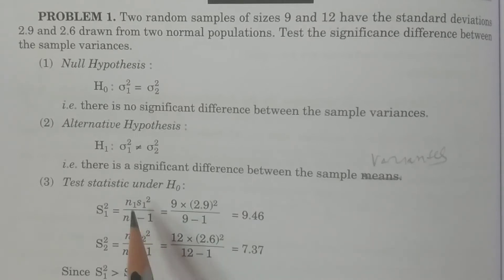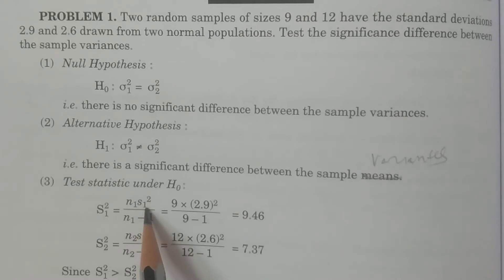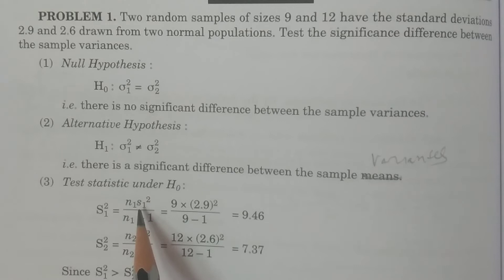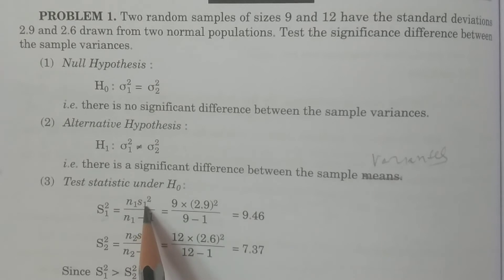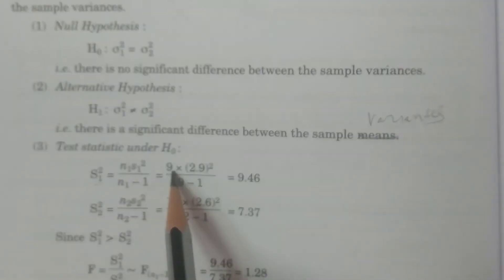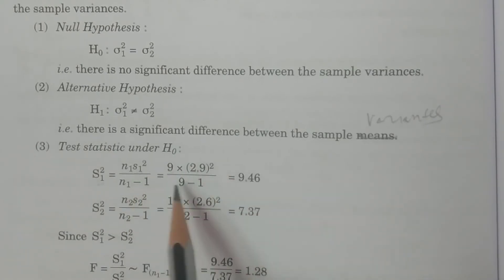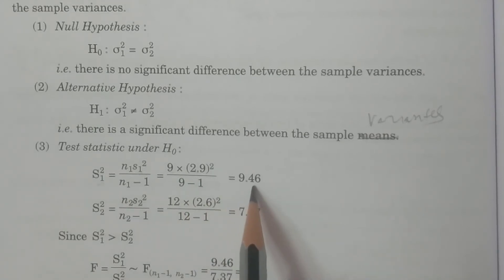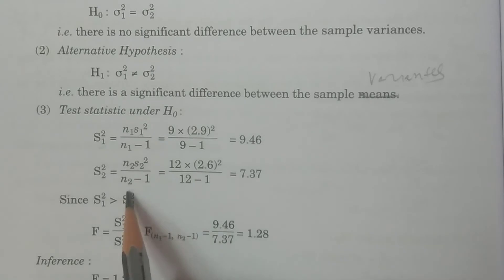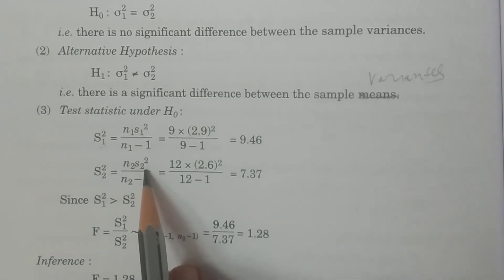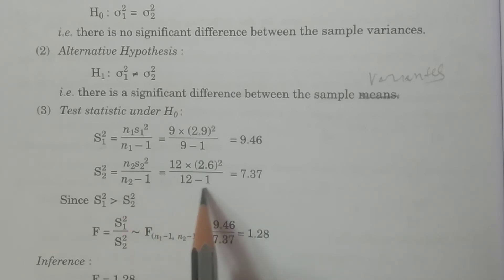Capital S1² = N1 × S1² divided by (N1 − 1). Here S1 is the sample standard deviation and S1² is the sample variance. Capital S1² = 9 × (2.9)² divided by (9 − 1) = 9.46. Similarly, capital S2² = N2 × S2² divided by (N2 − 1) = 12 × (2.6)² divided by (12 − 1) = 7.37.